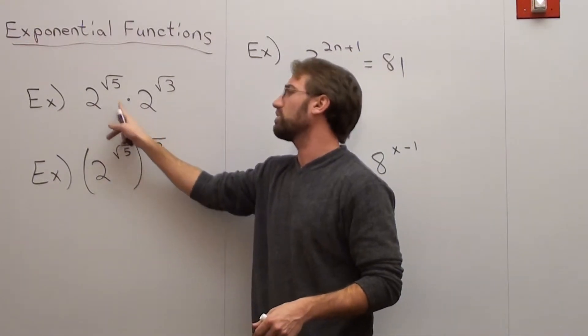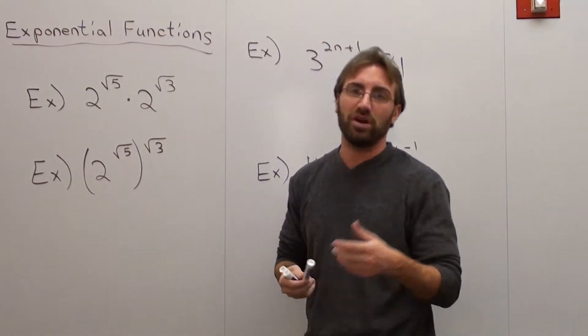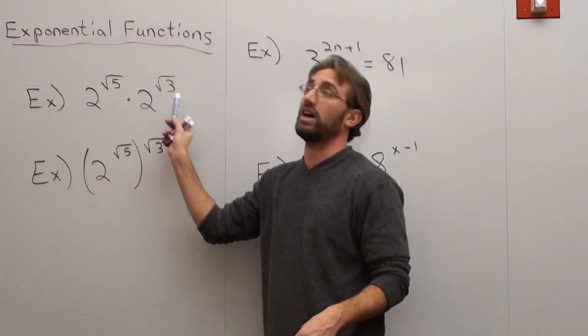If it's 2 to the 2 times 2 to the 3rd, it would be 2 to the 5th. You just add them up. Well you do the same thing here. You add them up. The problem is that you can't add up the square root of 5 and the square root of 3.